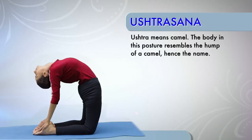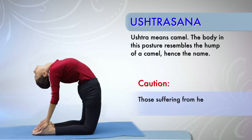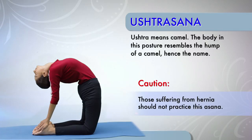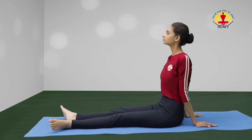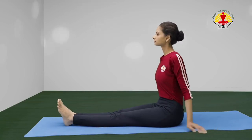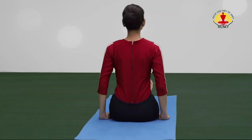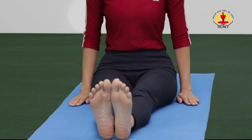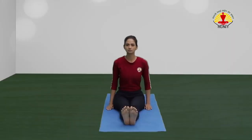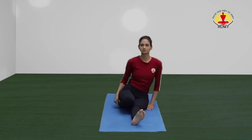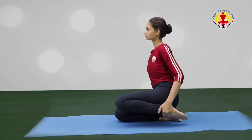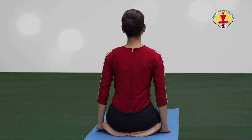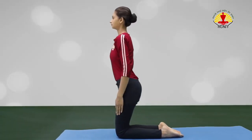Ustrasana or Camel Posture. Caution! Those suffering from hernia should not practice this asana. Start with long sitting posture. Sit with the back straight, legs stretched out in front, palms resting on the ground, fingers pointing forward. Fold the right leg at the knee and place the foot under the right buttock. Similarly, fold the left leg and place the left foot under the left buttock. Kneel up with thighs vertical.